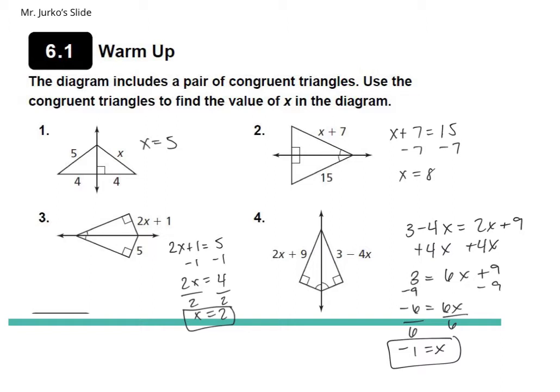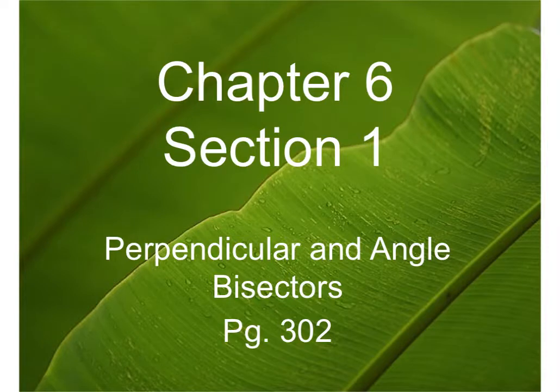The reason I picked this as a warm-up is because what we're looking at right now is exactly what we're learning today. It's all about perpendicular bisectors and angle bisectors — lines that divide two parts of a triangle into two equal parts. It bisects the base and it's perpendicular to that base. There are also ones that bisect an angle, creating two equivalent angles. Let's get started: chapter six, section one — perpendicular and angle bisectors.